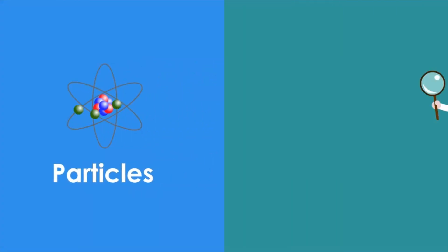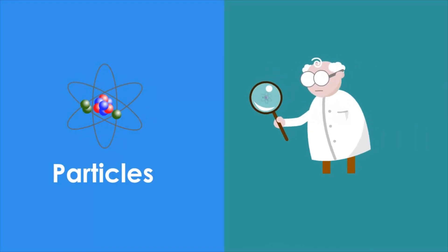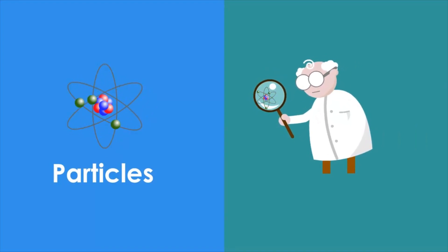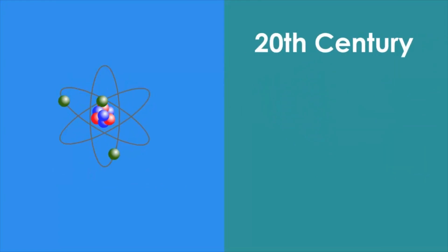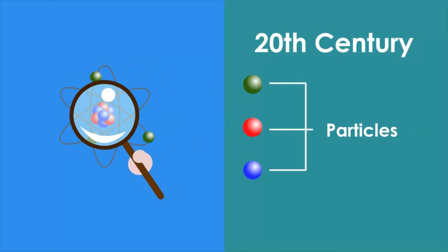They were called atoms because for a long time it was thought that they were the smallest existing entity and couldn't be further divided. However, in the 20th century it's been discovered that atoms are formed by even smaller particles.